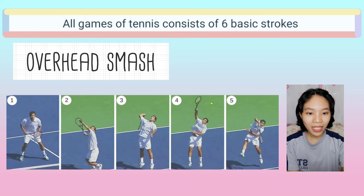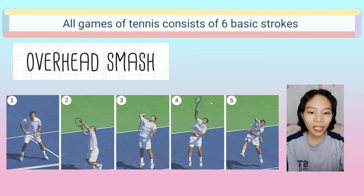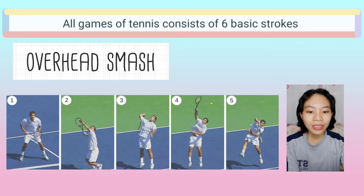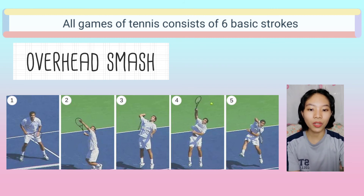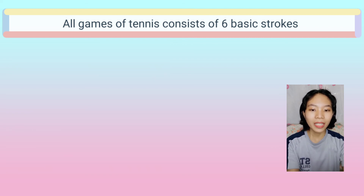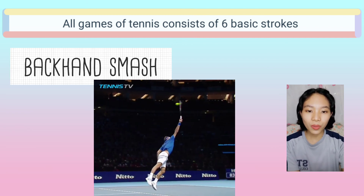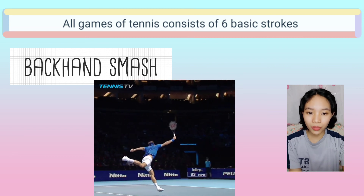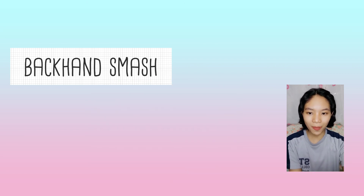Overhead Smash. An overhead smash is a stroke where the player contacts the ball with the racket above his or her head using a serve-like motion. This shot is commonly referred to as simply a smash or overhead, and the two terms are interchangeable. The term smash or overhead usually refers to the forehand smash, as this is the most common form of the shot. The backhand smash is only used when a player is unable to maneuver into a position to hit the more powerful forehand smash.